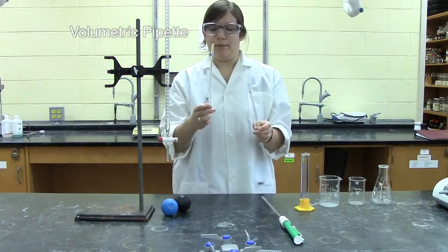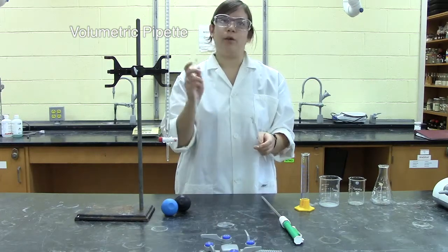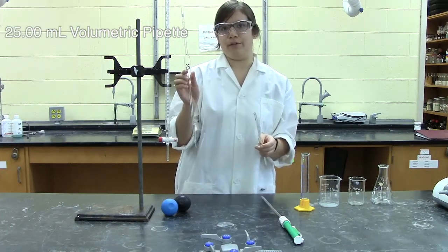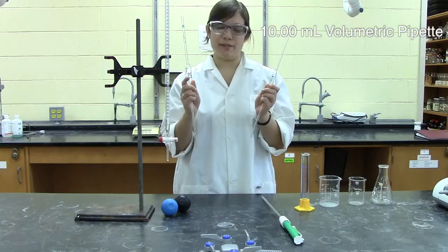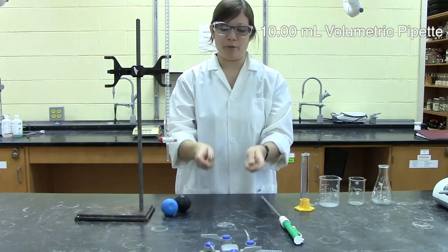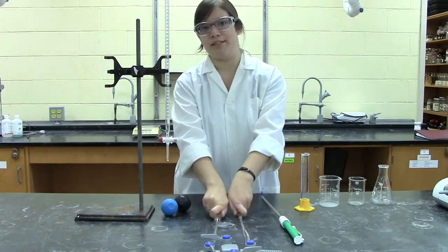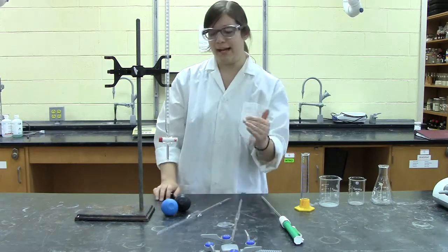Next we have volumetric pipettes. There are two in your locker. One reads to 25.00 milliliters, the other to 10.00 milliliters. They're good for making repeated measurements of the same fixed volume when you need exactly that amount.